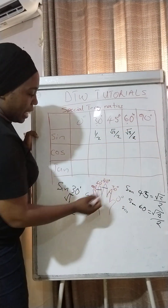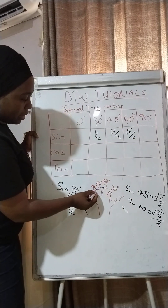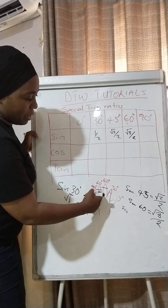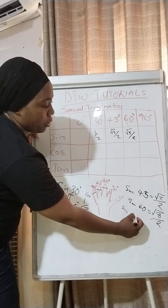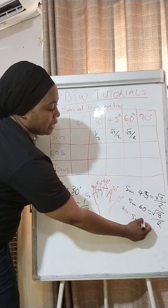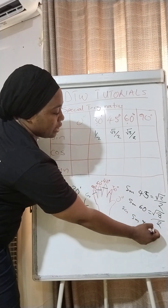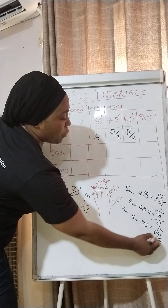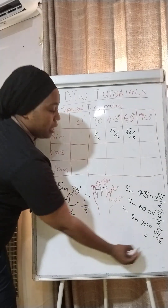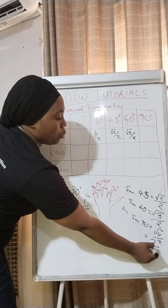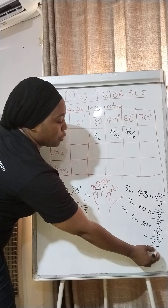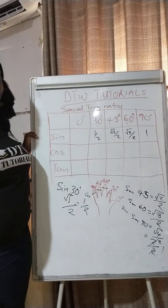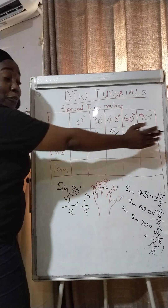What about sine 90? You cross the little finger. How many fingers are left on the right? Four. So sine 90 is the square root of four over two. The square root of four is two, and two over two is one. So sine 90 is one. We've quickly completed our sine column.